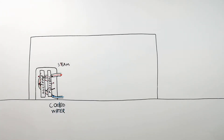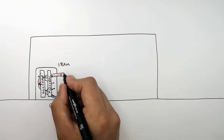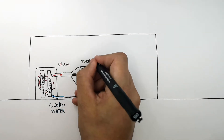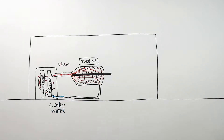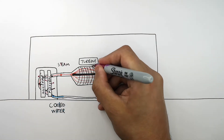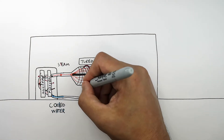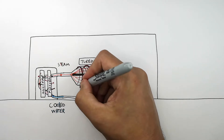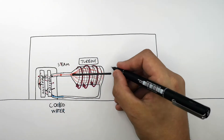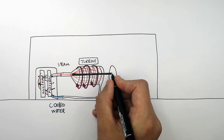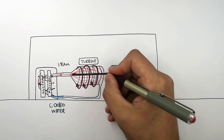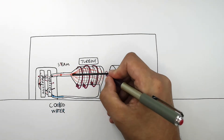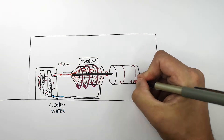Steam then turns a turbine. What I'm drawing here is a turbine — it is turned by fast-moving steam. The steam drives the turbine, which as it turns is connected to a generator. As the generator turns, an electrical current is generated.